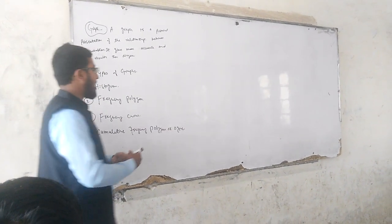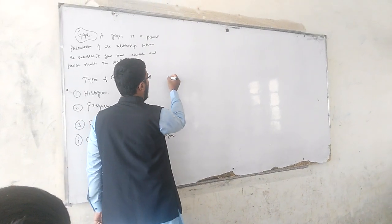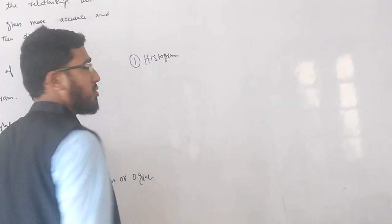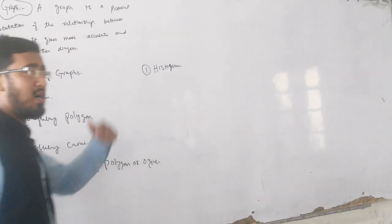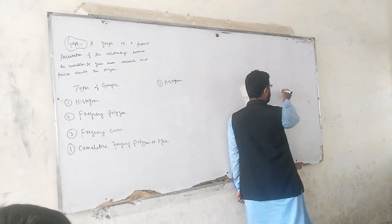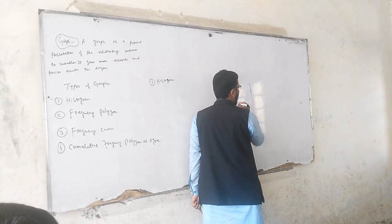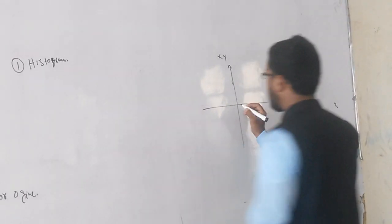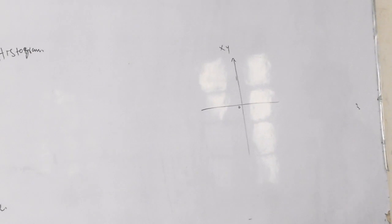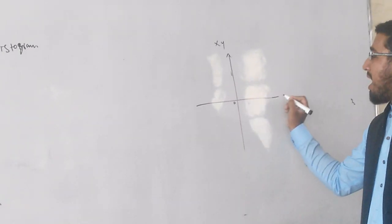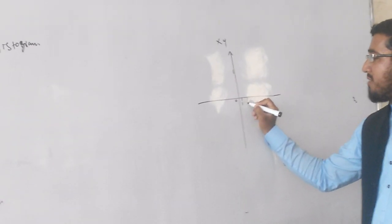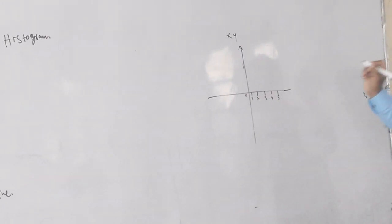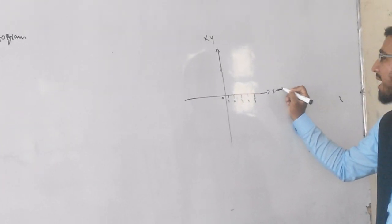One by one we will discuss how we can construct the histogram. As you know very well, in the previous lectures we have already discussed that we have an XY plane. In the XY plane, the first thing is your origin, which is zero. Origin means starting point. After the origin point, we can start the number line, which is the positive side of the X, which we can say is the X-axis.